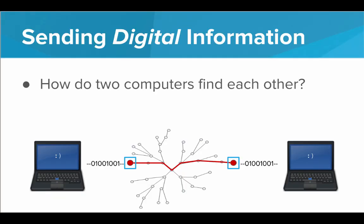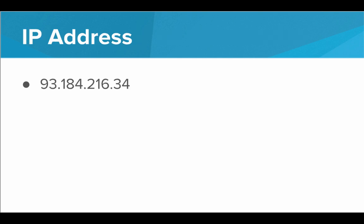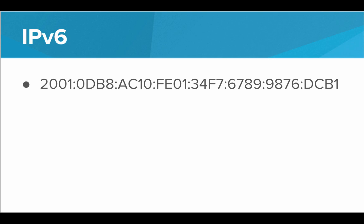So first, let's do a quick recap. We know that the internet is all about sending digital information — it's about getting binary information from one computer to another on the same network. So how do these two computers find each other? Well, we have addresses for every computer on the internet. We have a unique address, and that is known as an internet protocol address, an IP address.